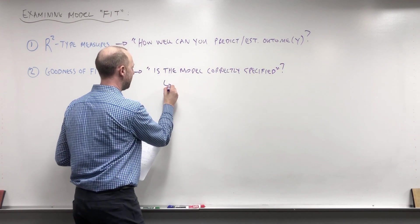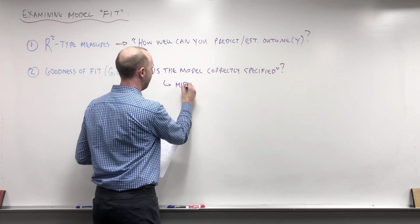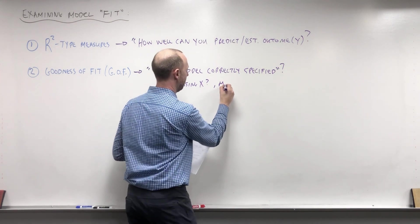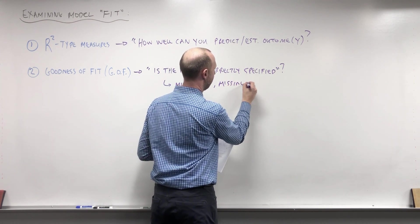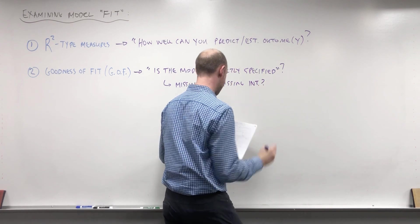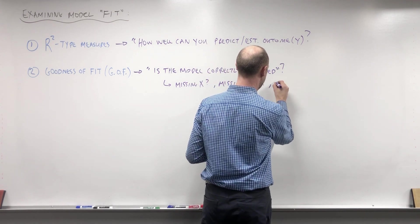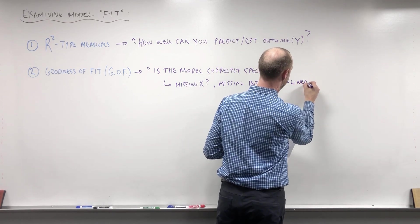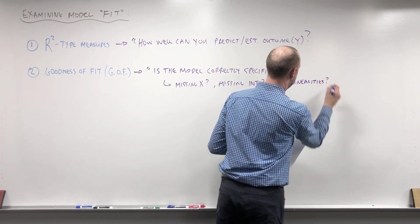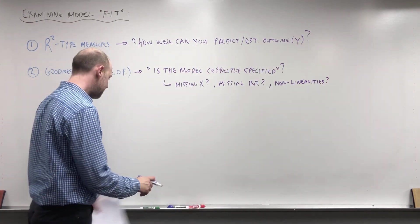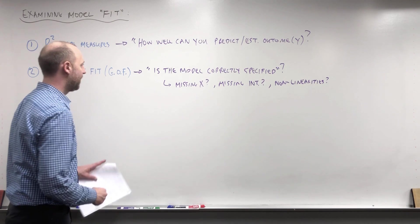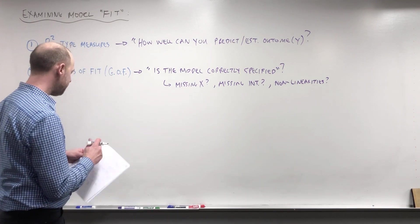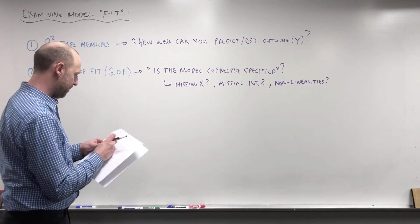What we mean by that is: are you missing certain X variables, are you missing an interaction term, are you missing other non-linearities that you're not addressing, things like these. I'm going to draw some examples in a moment to try and tease these two apart. Before I do that, let me point to this here.